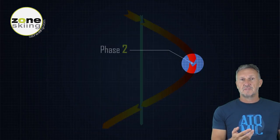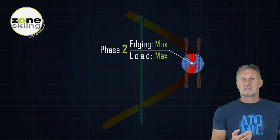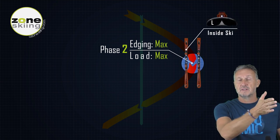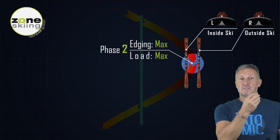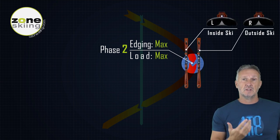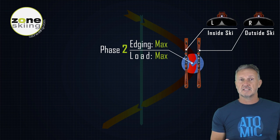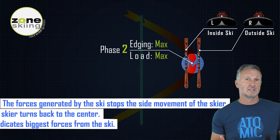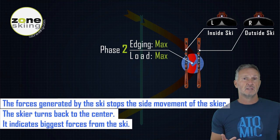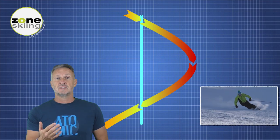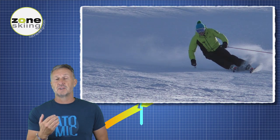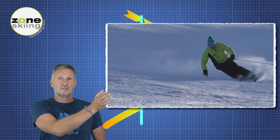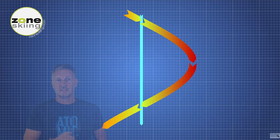In the second phase, the skis are winning against the impulse of the previous turn. Therefore, theoretically, the load is the highest and the edge angle is the biggest at that point. In this phase, we cannot speak about uphill or downhill ski — only inside or outside.